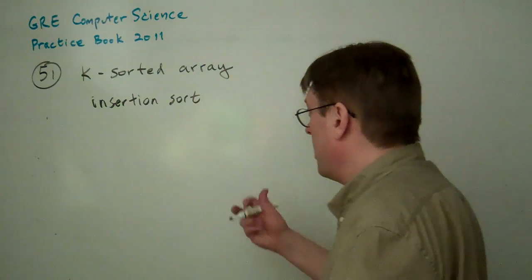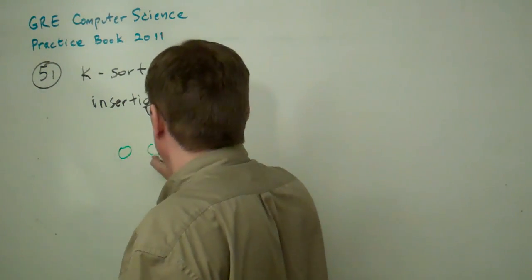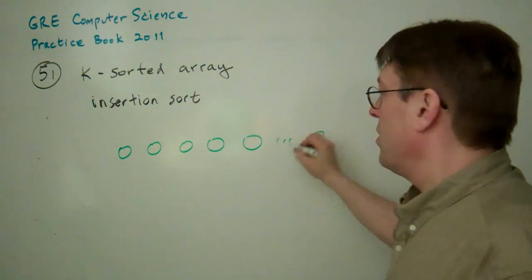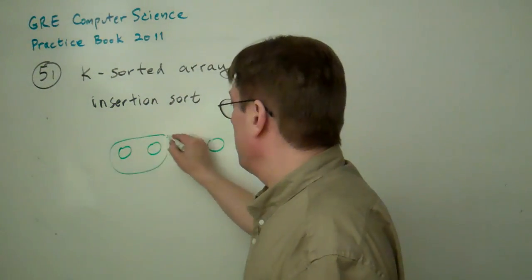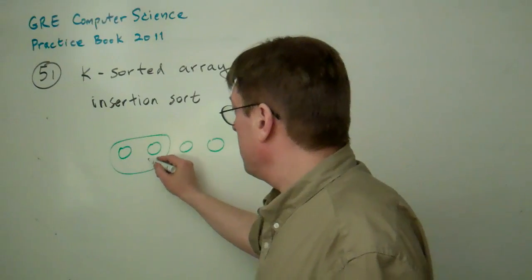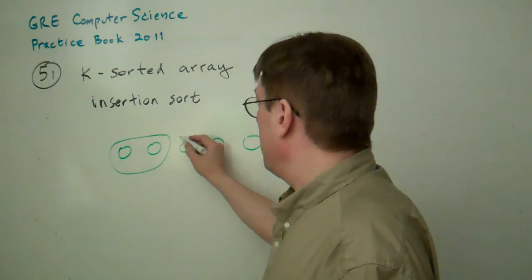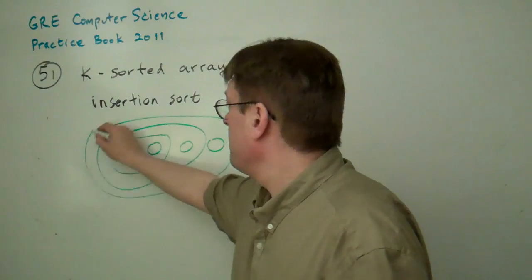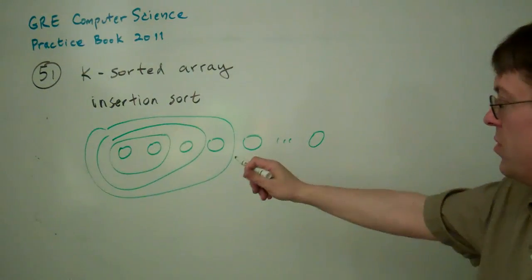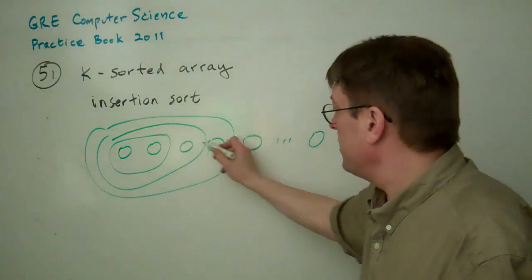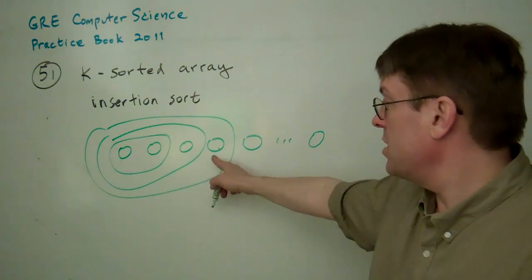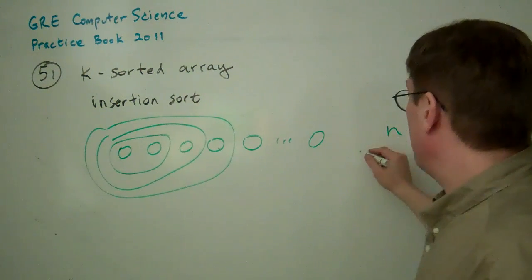Well, how does insertion sort work? Insertion sort, first you take the first two numbers, you sort them, then you take the next group, and then you take the next group, and you process this n times because you're going through this array n times to catch each element of the array.